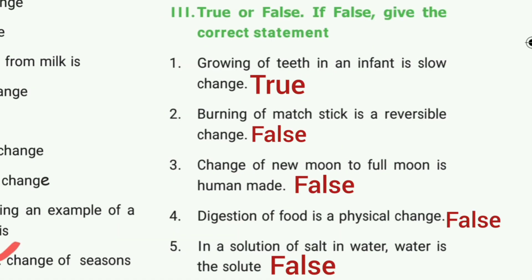True or False. First one: growing of teeth in an infant is a slow change - the answer is true. Second one: burning of a matchstick is a reversible change - the answer is false. Third one: change of new moon to full moon is human-made - the answer is false.